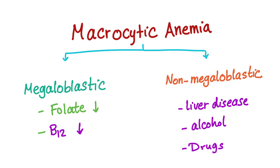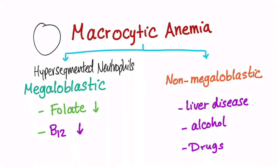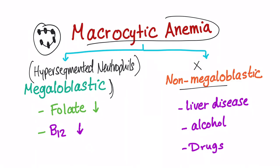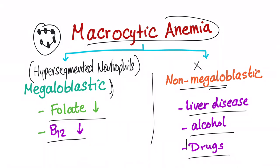Macrocytic anemia is further subdivided into two subtypes: megaloblastic and non-megaloblastic. Megaloblastic anemia features hypersegmented neutrophils — normally a neutrophil has around three to four lobes, but in hypersegmented neutrophils it can have up to five, six, or even seven. The causes of megaloblastic anemia are folate deficiency and vitamin B12 deficiency. The non-megaloblastic causes are liver disease, alcoholism, and drugs. Let me know in the comments which drugs can cause macrocytic anemia.